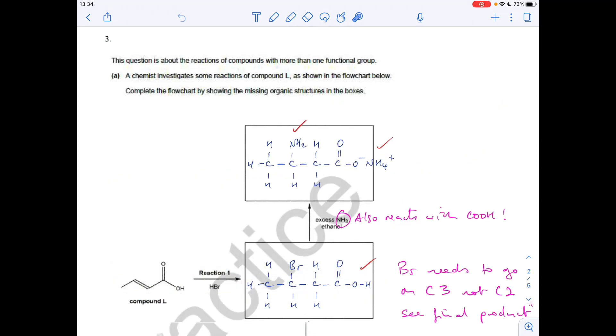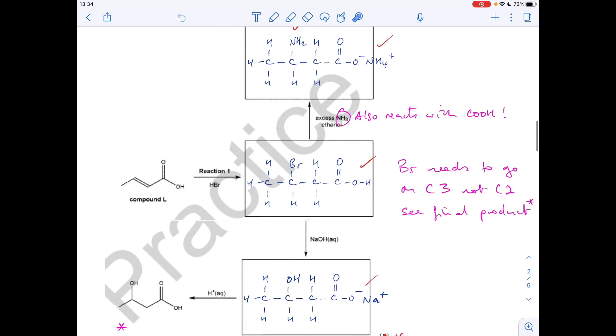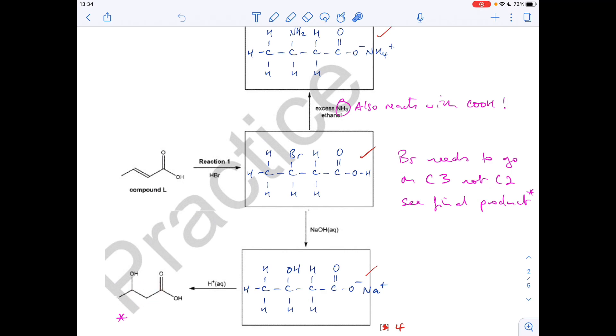Moving on to question three, we've got this flowchart involving reactions of compound L. I'm actually going to focus on this first, because we're given the final product of this part of the flowchart, and the important thing to note here is that OH group is on carbon number one, two, three. So when we react it with HBr, remember HBr can add either way across that double bond, we want the bromine to go here, because then when it reacts with sodium hydroxide, it'll substitute for the OH group. So that was important to spot, to get it the right way around. I've just written there, Br needs to go on carbon three, and not carbon two, see final product.